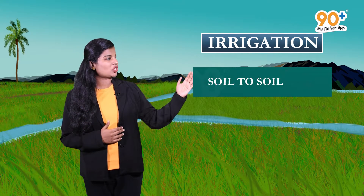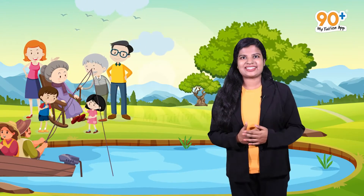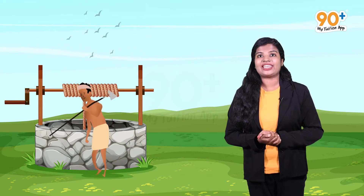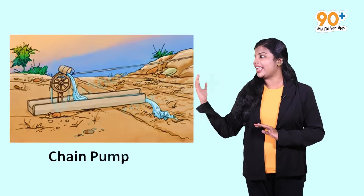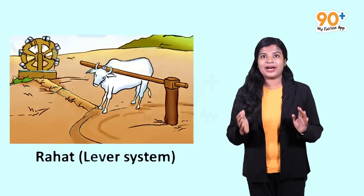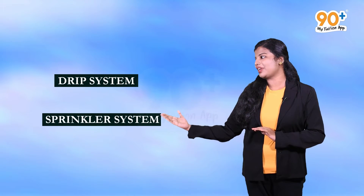Irrigation varies from soil to soil, season to season, and crop to crop. The major sources of water used for irrigation include dams, rivers, and lakes. We also have wells, tube wells, and canals. Traditional methods used for irrigation include the moat (also called the pulley system), chain pump, dhekli, and rahat. Modern technology has replaced these with drip systems and sprinkler systems.